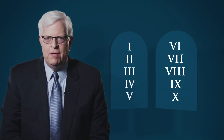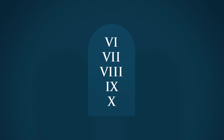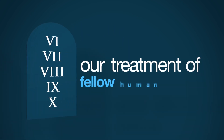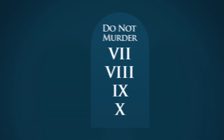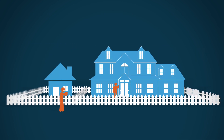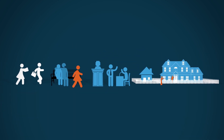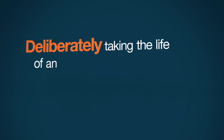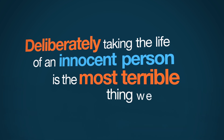The Ten Commandments are portrayed on two tablets. The five commandments on the second tablet all concern our treatment of fellow human beings. The first one on that list is 'do not murder.' Why? Because murder is the worst act a person can commit. The other four commandments — prohibiting stealing, adultery, giving false testimony, and coveting — are all serious offenses. But murder leads the list, because deliberately taking the life of an innocent person is the most terrible thing we can do.